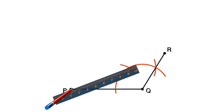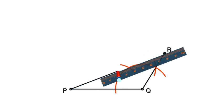And so, the final step will be to connect, use my ruler to connect P to R, and that would be the final step.